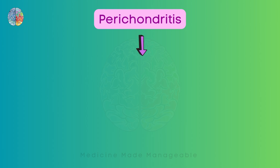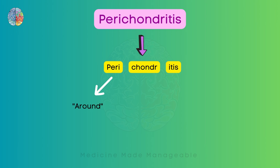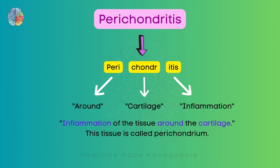Talking about perichondritis first. Breaking up this word gives us: peri, chondre, and itis. Peri means around, chondre means cartilage, and itis means inflammation. So it is the inflammation of the tissue around the cartilage, and this tissue is called perichondrium.